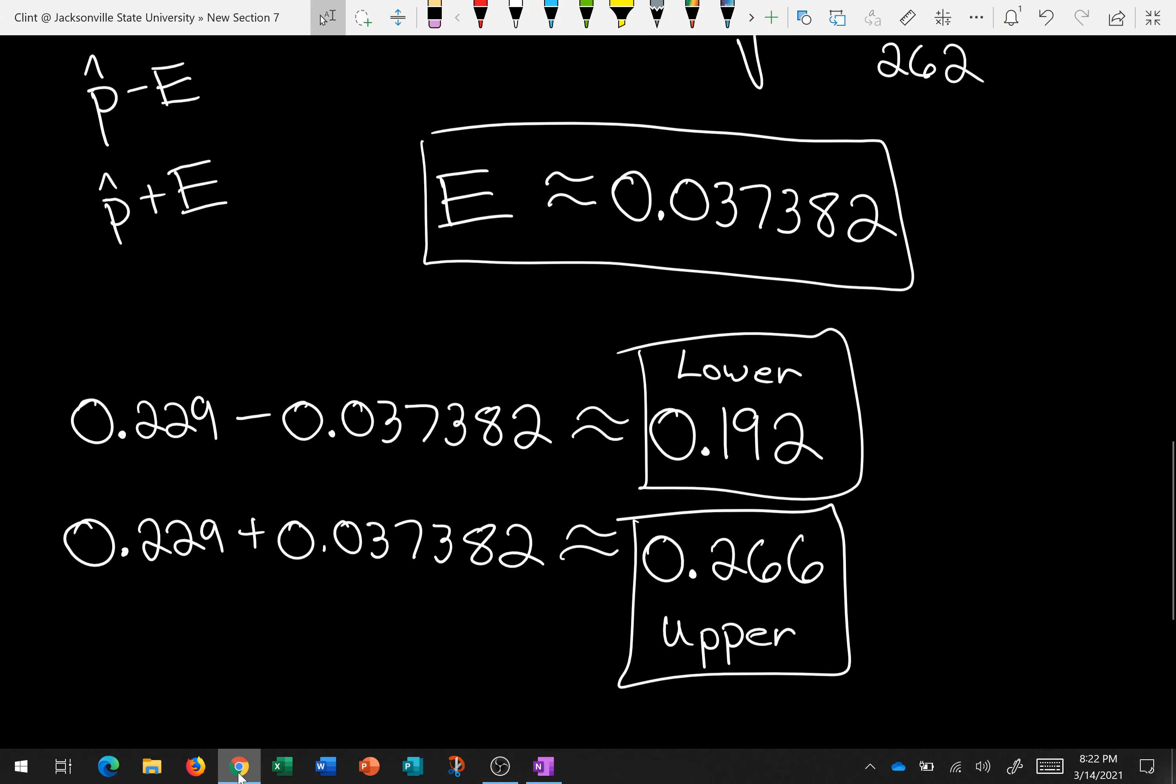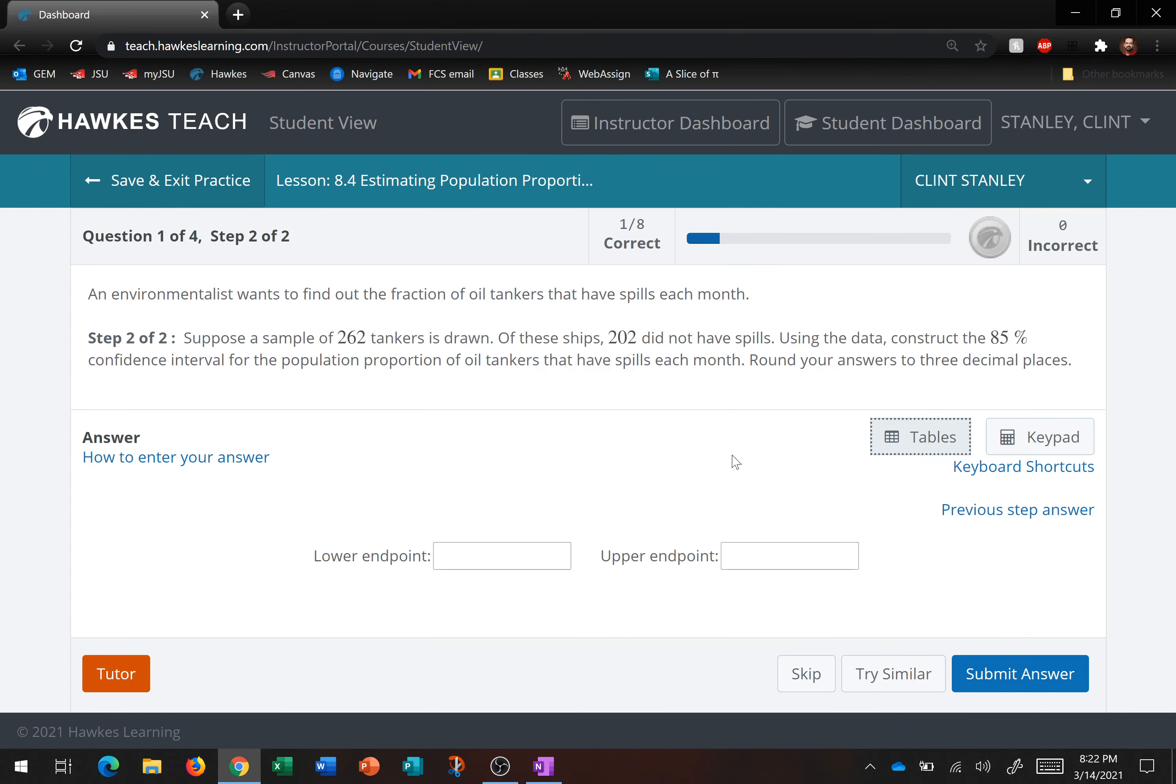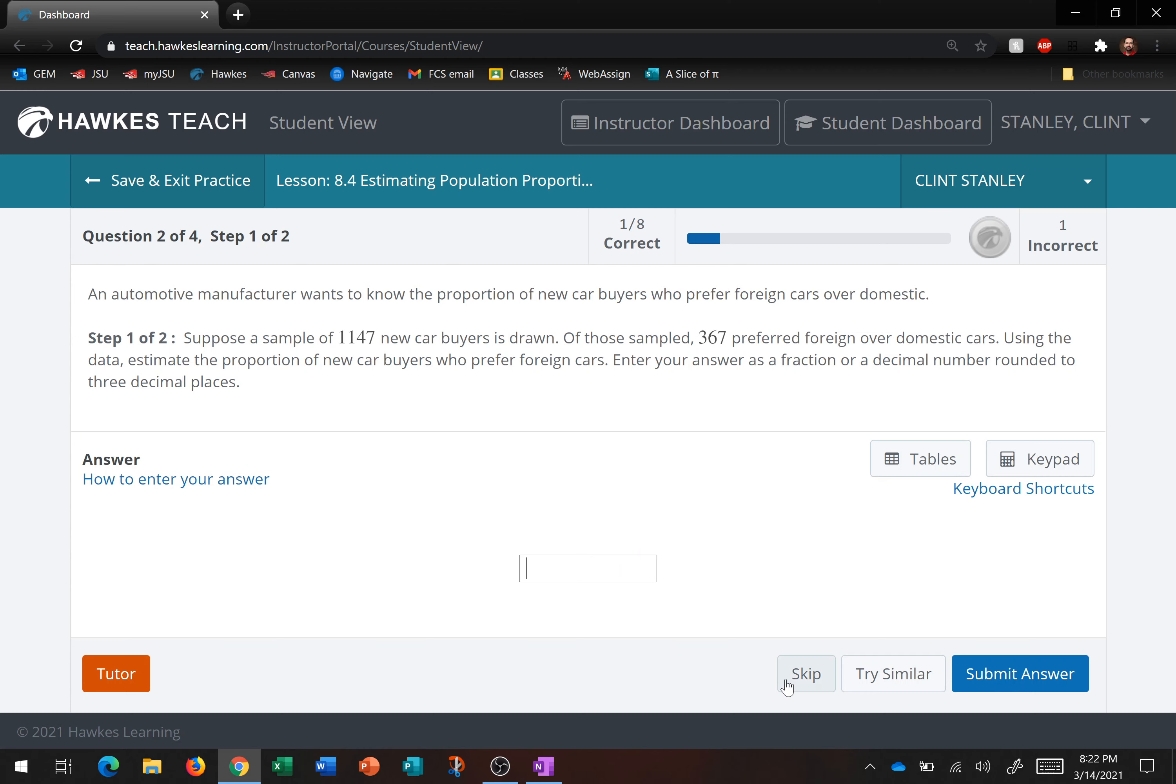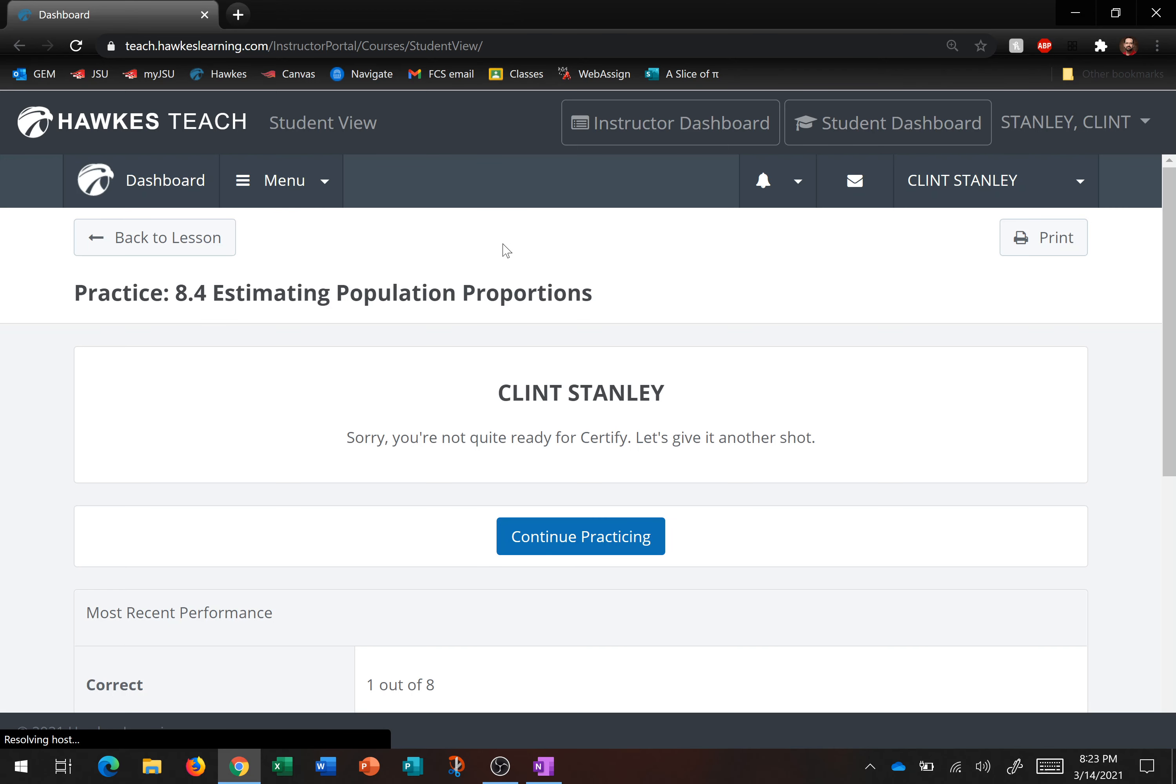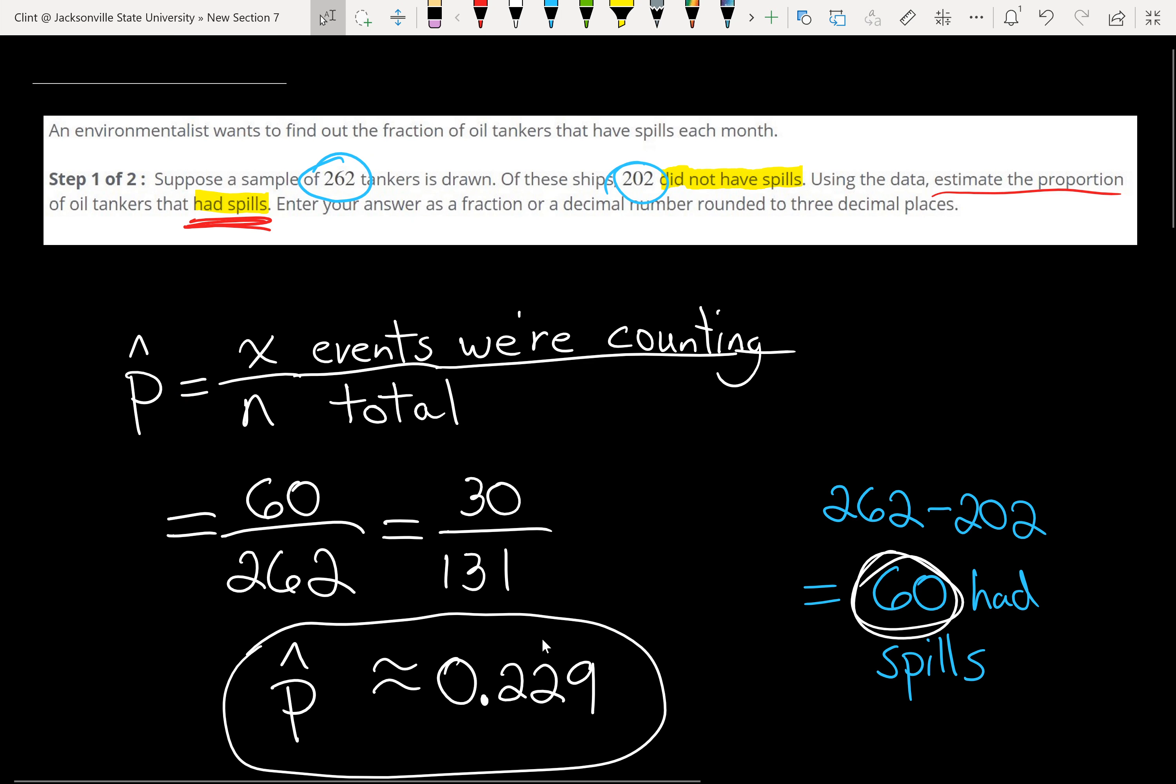And the only other thing to mention here really, sometimes the problem could have just said, instead of saying 202 did not have spills, it could have told us 60 had spills. And we wouldn't have had to have done that subtraction step. But since it gave us the opposite of what we wanted, it said 202 did not have spills, we had to subtract to figure out the top number for our proportion. And so just read those carefully there. Let me know if you have any questions.